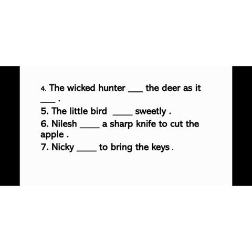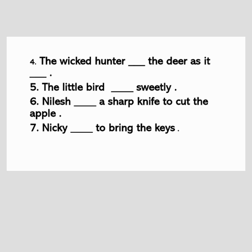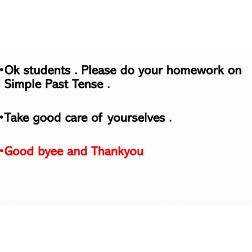1. I [blank] an old lady across the street. 2. Mohan [blank] at about 9 p.m. last night. 3. The dentist [blank] out my tooth. 4. The wicked hunter [blank] the deer with a [blank]. 5. The little bird [blank] sweetly. 6. Nilesh [blank] a sharp knife to cut the apple. 7. Nikki [blank] to bring the keys. 8. A strong wind [blank] and [blank] the vase off the table. Please do your homework on simple past tense.